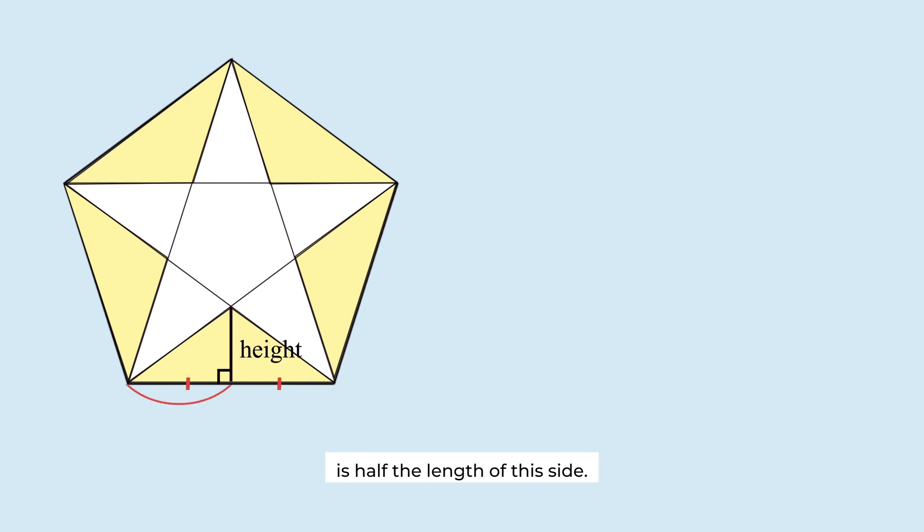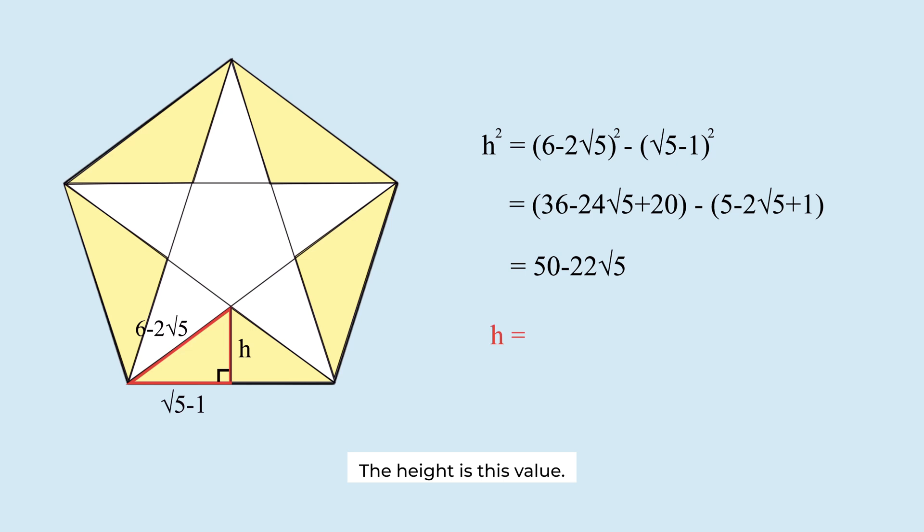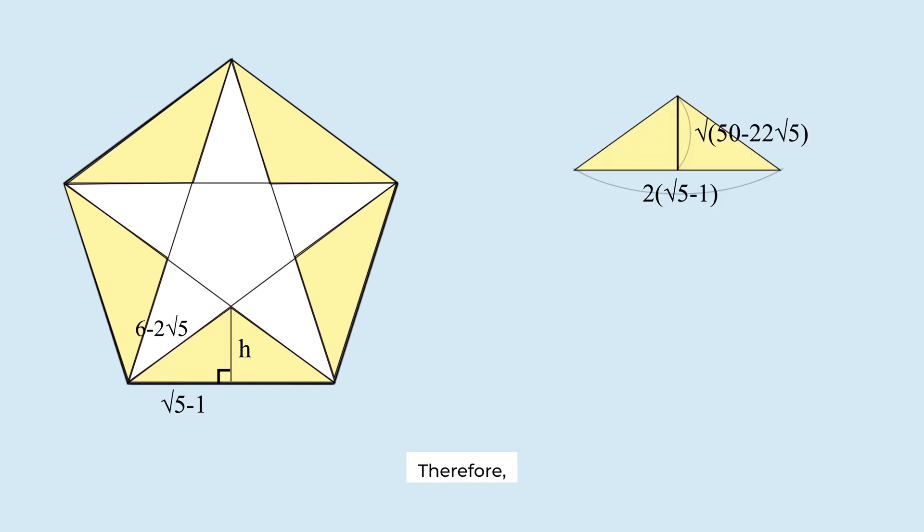The length of this side is half the length of this side. The length of this hypotenuse is the length of the diagonal minus this length. We apply the Pythagorean theorem to this right triangle. Simplify this equation. The height is this value. Therefore, the area of one triangle is this.